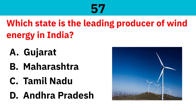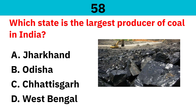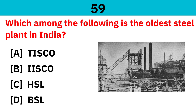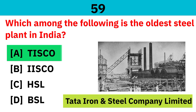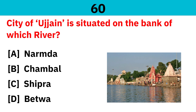Which state is the leading producer of wind energy in India? Correct answer is Tamil Nadu. Which state is the largest producer of coal in India? Correct answer is Jharkhand. Which among the following is the oldest steel plant in India? Correct answer is TISCO. The city of Ujjain is situated on the bank of which river? Correct answer is Shipra.